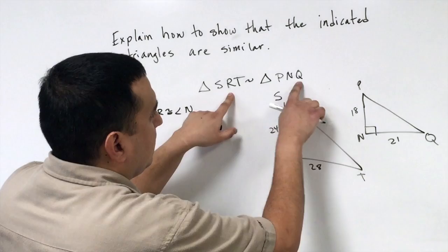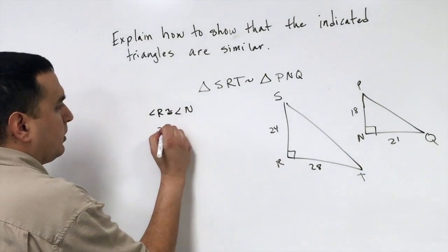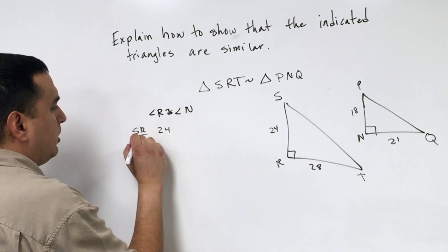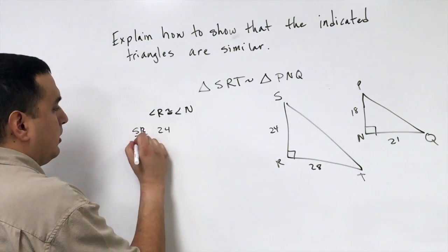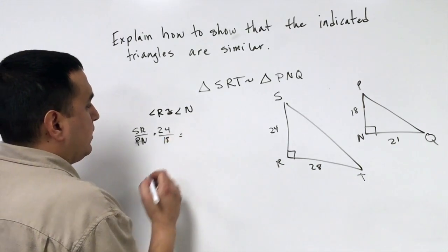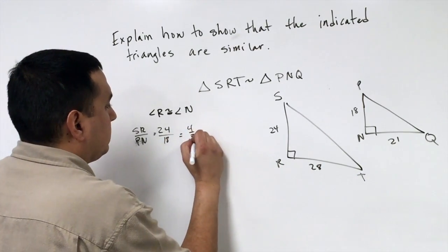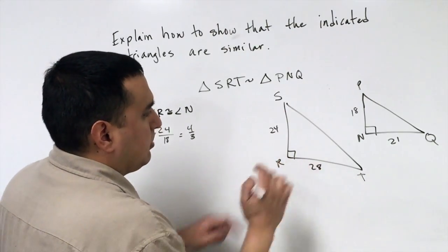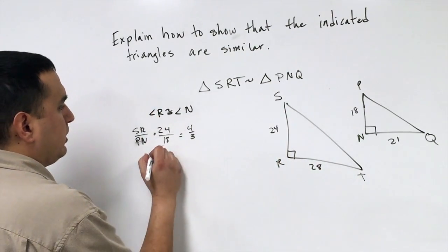If I look at SR compared to PN, that's going to be 24 over 18. That's going to reduce down to four-thirds. Then I have this other leg that makes up angle R. So it's RT, corresponding to NQ.